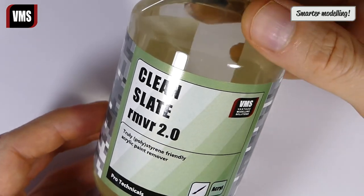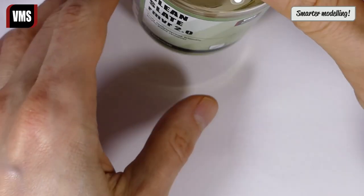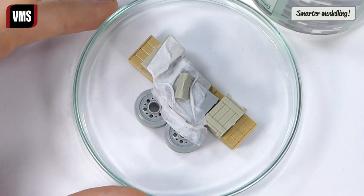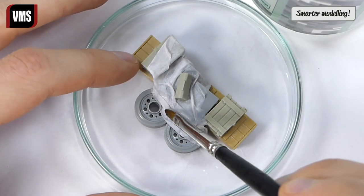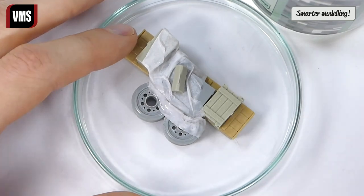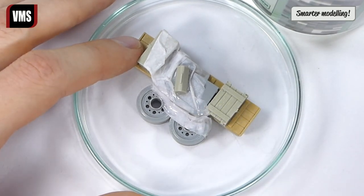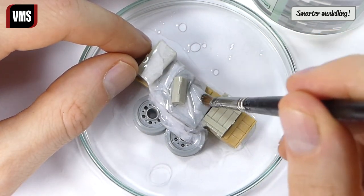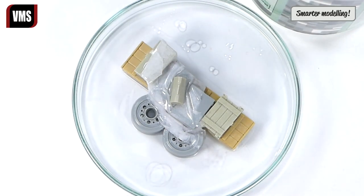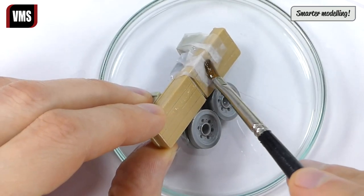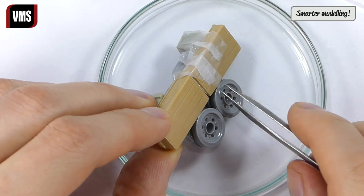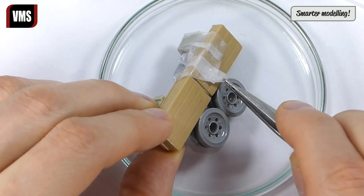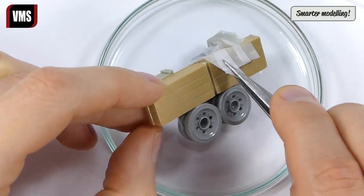To make detachable canvas, we need to reactivate dried paper using VMS Clean Slate remover. Wet the paper with the fluid and let the remover work 30 to 60 minutes. Add more fluid every 10 minutes if your paper shape is thick and complex. After 30 minutes, you can try lifting the paper.